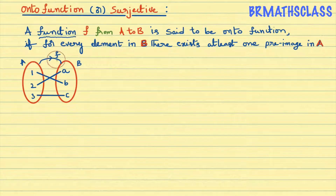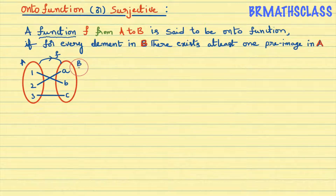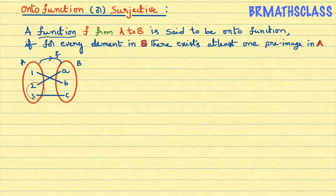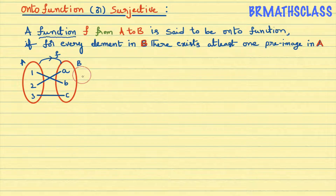Look at this example — it is a function from A to B. First, we need to check if it is a function. If it is not a function, there is no question of it being onto. Every element of set A is used and it is used only once. So, f from A to B is clearly a function.